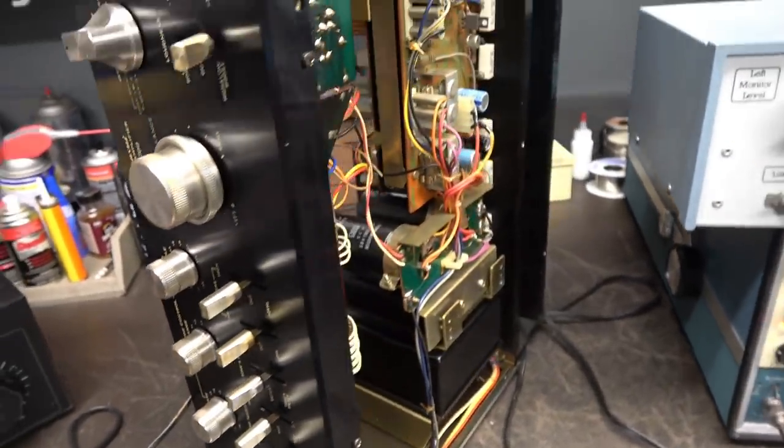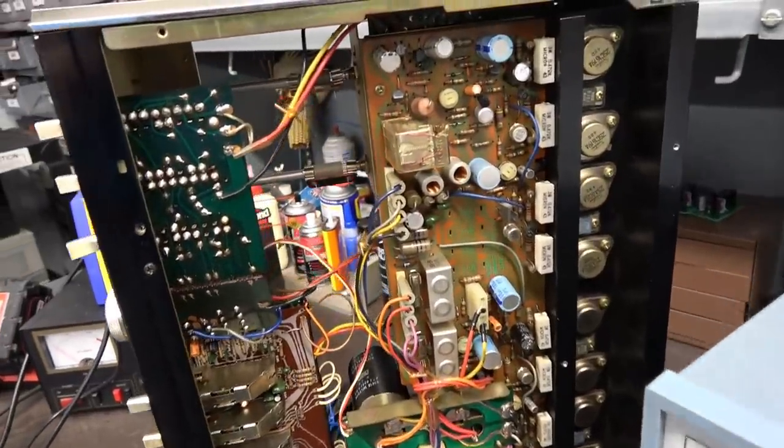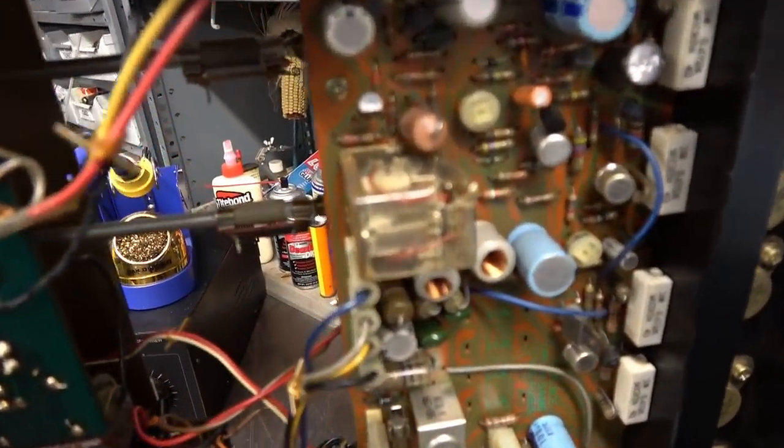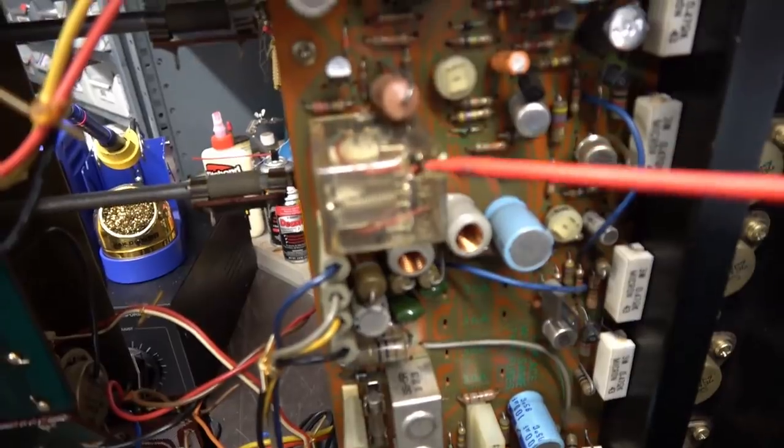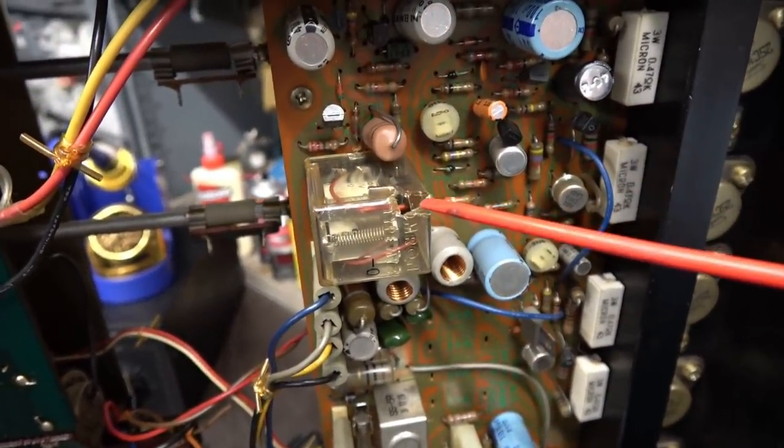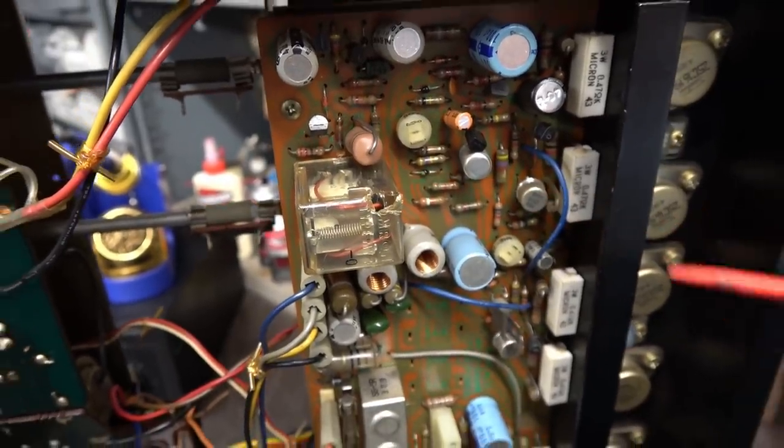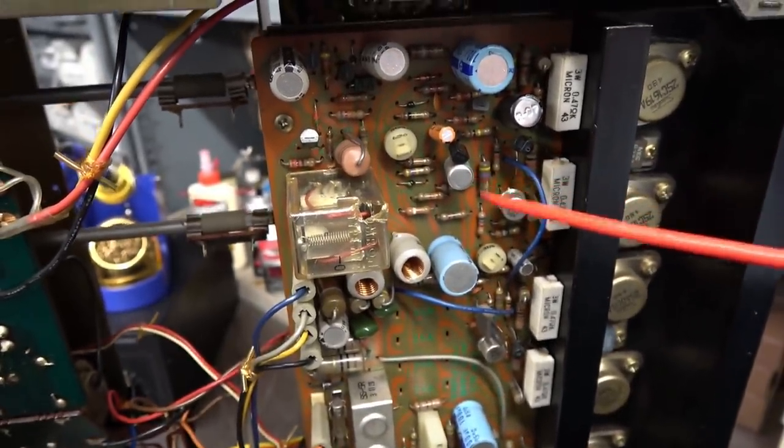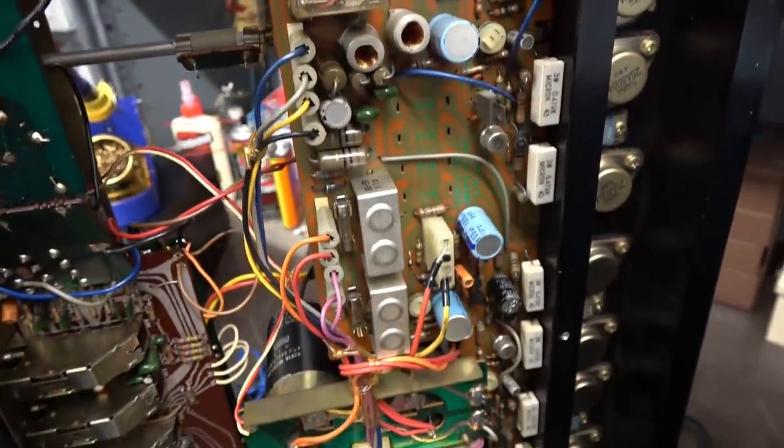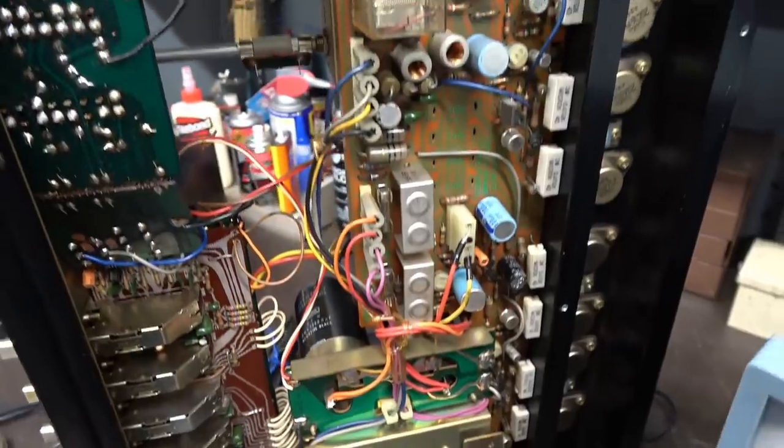I've got the bottom off of the Sansui amplifier. There's the AU-7700, bottom's off, and my suspicions of course the protect relay. There it is. Do you see what I see? There's a big hole in the relay. Somebody's been in here messing around. This board also has several pregnant capacitors. I'm sure it's plagued with bad solder connections.